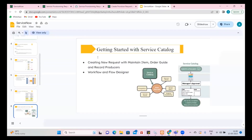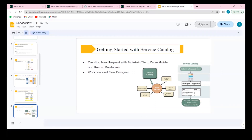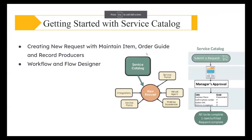We have configured the notification to send some emails, so this would have triggered an email. We can see 'ESA Provision Request' — this is the one that just got created. Our emails work, record producers are working, and this is where the service catalog comes into picture. There are many such use cases which we can use, and everything follows its own workflow. We can create our own workflows and flow designers to honor this particular request.